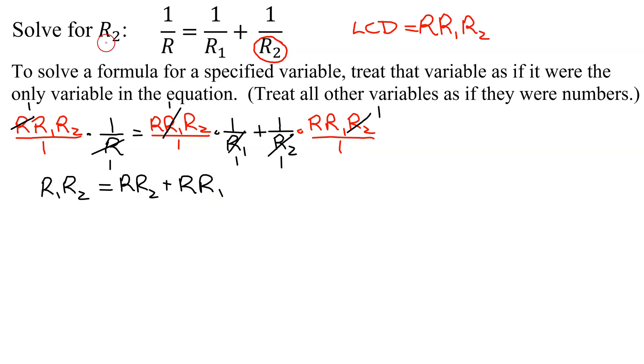Now remember, we're looking for R2. How many times does it occur in this equation? Twice, in two separate terms. So I'm going to have to collect both terms that have R2 on one side of the equation. I'm going to collect them on the left-hand side. So I'm going to have to subtract R, R2 from both sides of the equation.